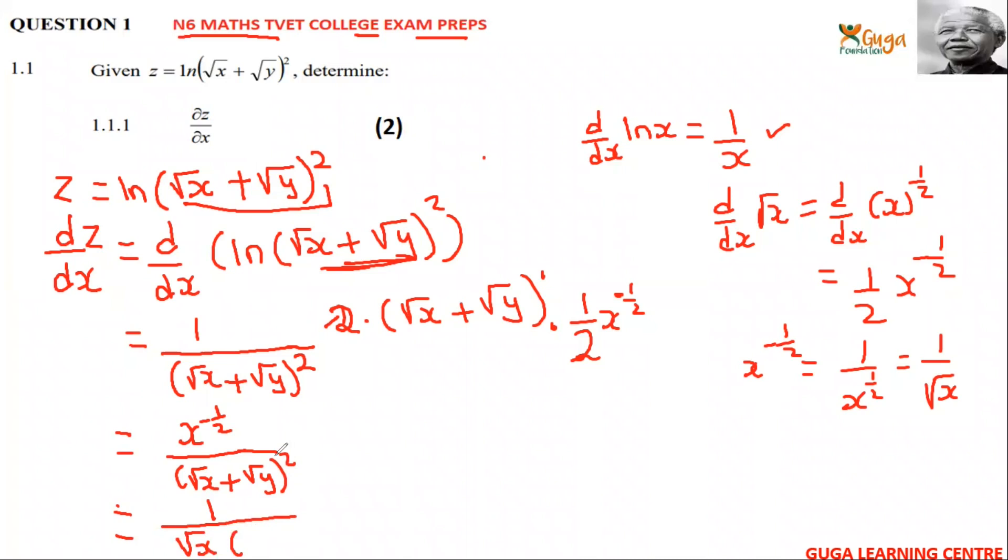Here there's no squared because this 1 and this 1 will cancel. So you have 1 over √x(√x + √y), and that's it. Subscribe, like, and comment. See you next time.